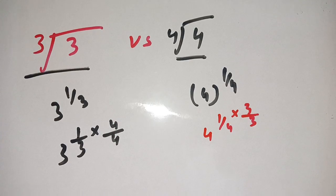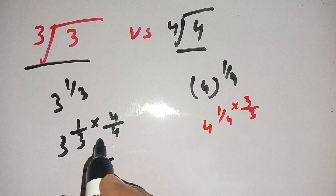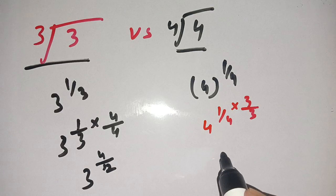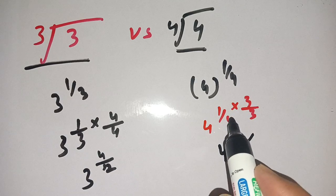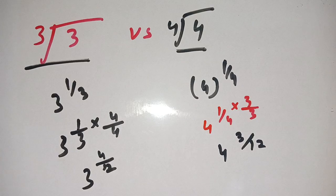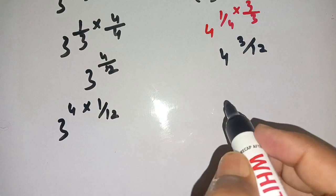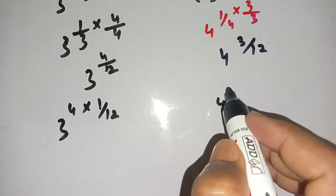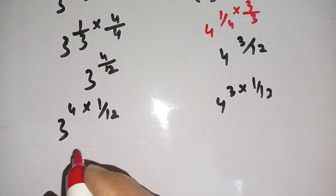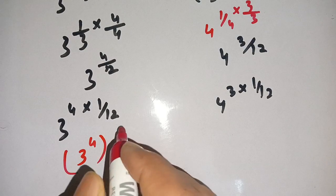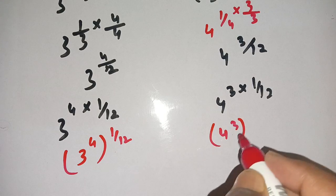This gives us three to the power of four over twelve, and four to the power of three over twelve. We can rewrite these as three to the power of four, all raised to the power of one over twelve, and four to the power of three, all raised to the power of one over twelve.